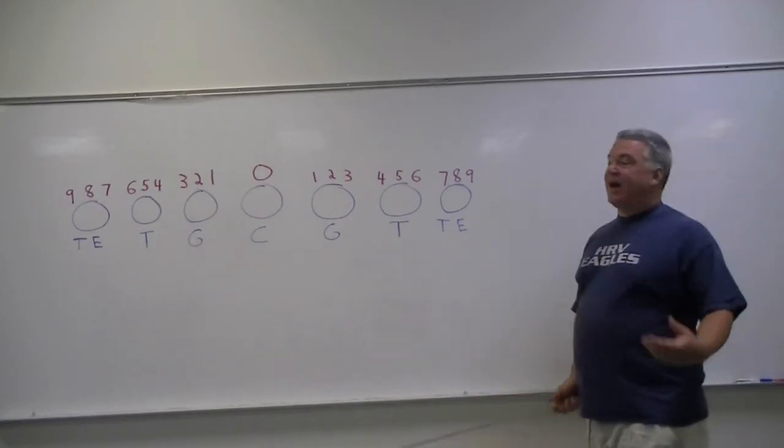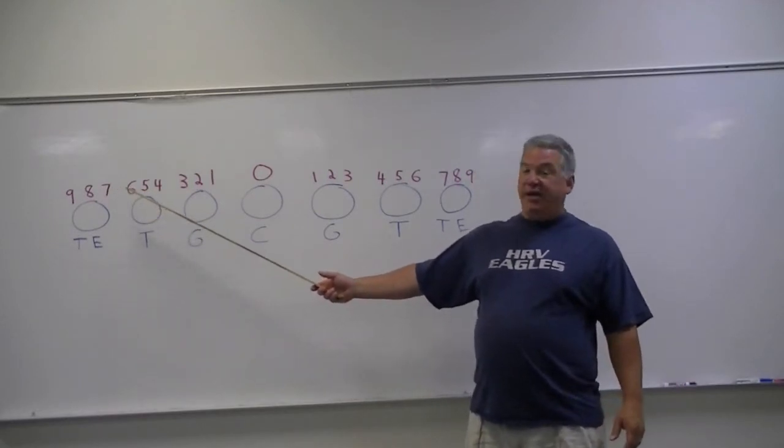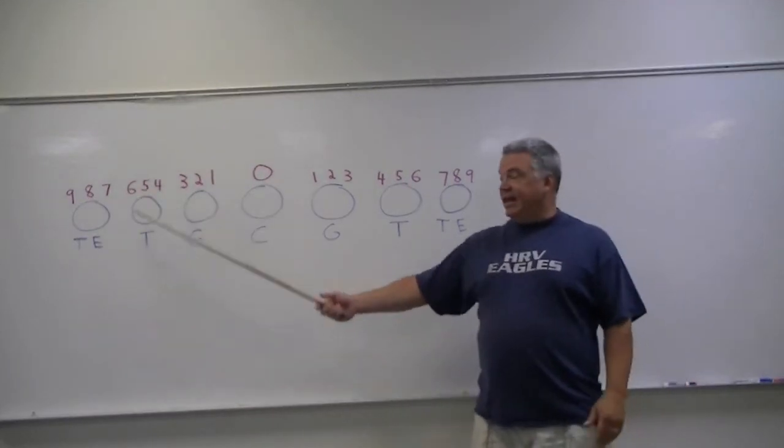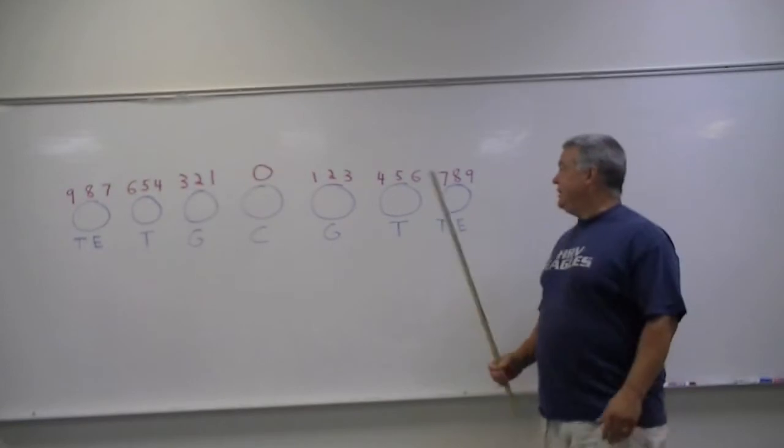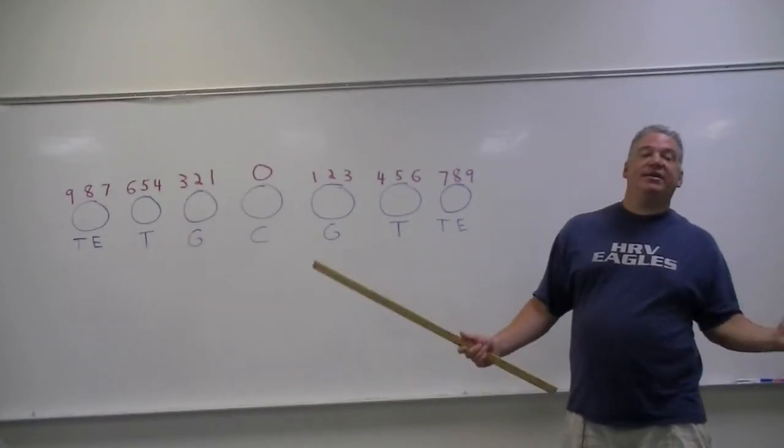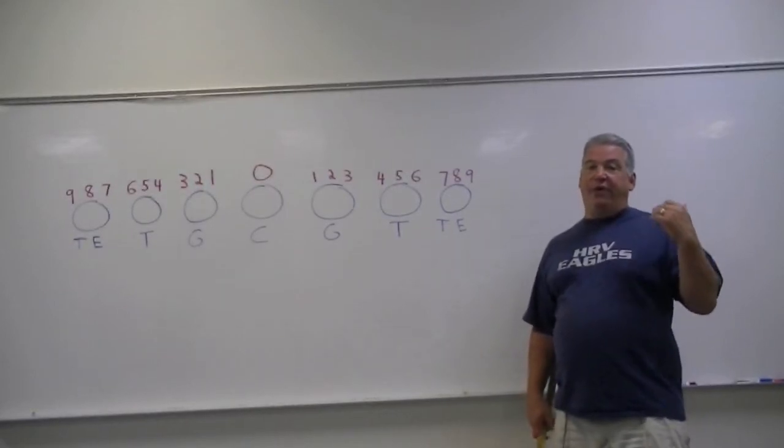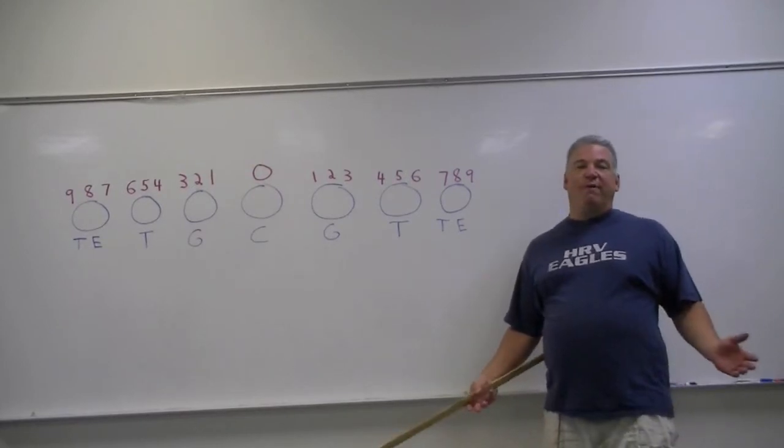And if you've got a tight end, you have a seven is an inside shade, an eight is straight up on him, and a nine is an outside shade on that tight end. It's a pretty simple numbering system and it allows us to do a lot of things, and I'll go on in just a second here and show you how I would do this if I were running a five three or if I were running a four four.